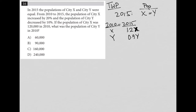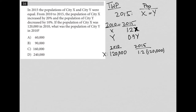The next sentence says the population of city X was 120,000 in 2010. So I actually do know that value. For 2015, the population should be 1.2 times 120,000. Throwing that into my calculator, I get 144,000. So that's the population of city X in 2015.